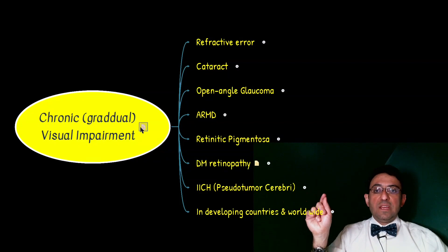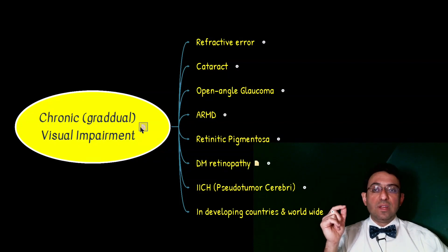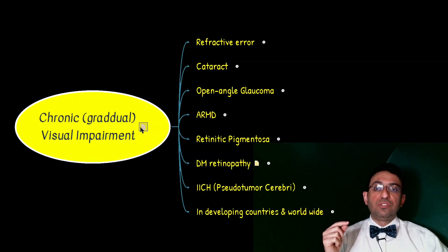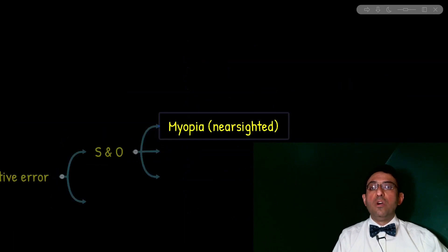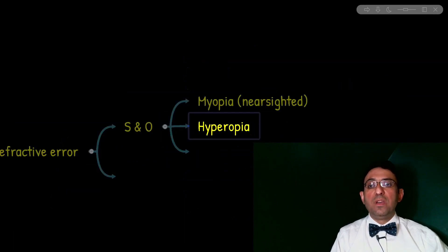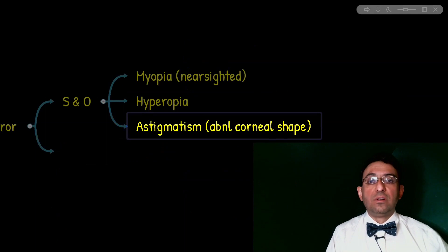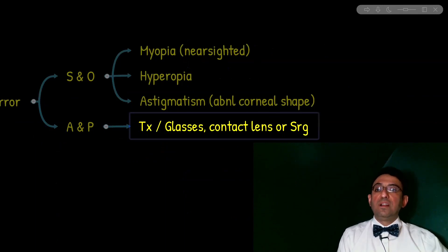Before going through the list, remember that optic neuritis can be associated with acute or chronic visual impairment. We will distinguish between subtypes of optic neuropathy versus optic neuritis in a separate episode. Beginning with refractive errors, the three subtypes are myopia (nearsightedness), hyperopia, and astigmatism. Astigmatism is due to abnormal corneal shape. Treatment for refractive error is either glasses, contact lenses, or surgical correction.